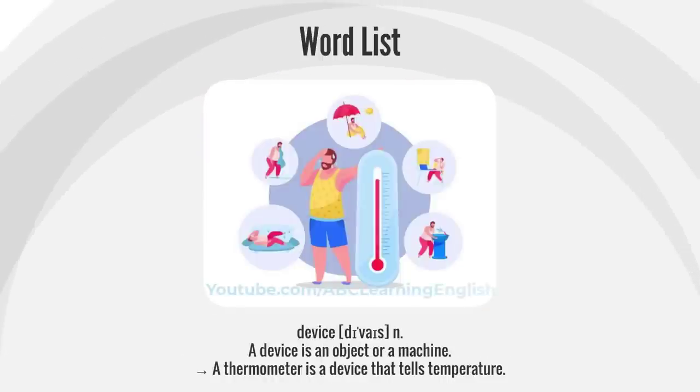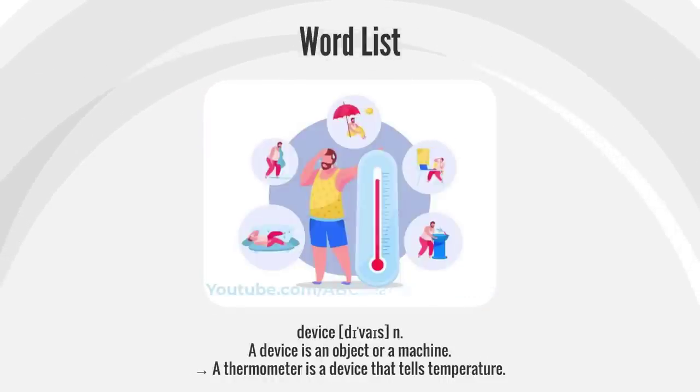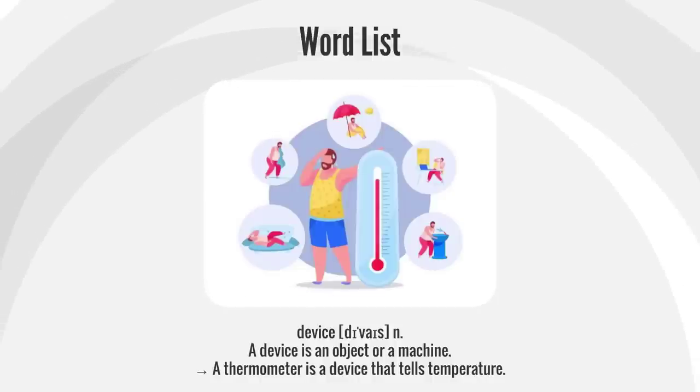Device. A device is an object or a machine. A thermometer is a device that tells temperature.